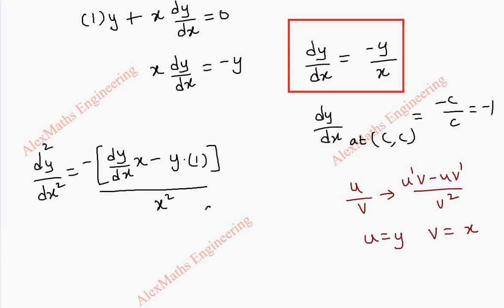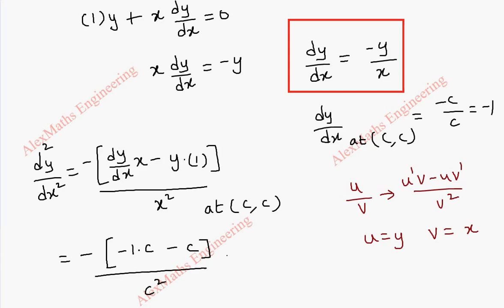Now we evaluate d²y/dx² at (c, c). There is a minus sign outside. Substituting dy/dx = −1, x = c, and y = c: we get minus [(−1)·c − c] / c² = minus [−c − c] / c² = minus [−2c] / c². This gives +2c / c², which simplifies to 2/c.